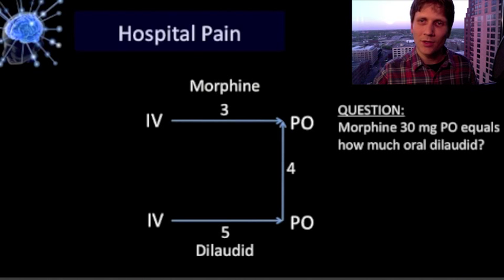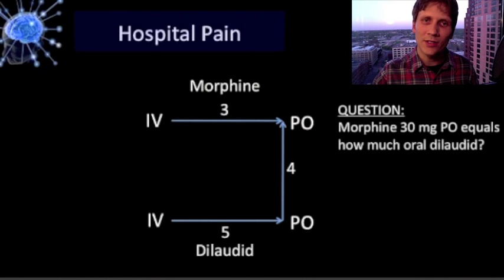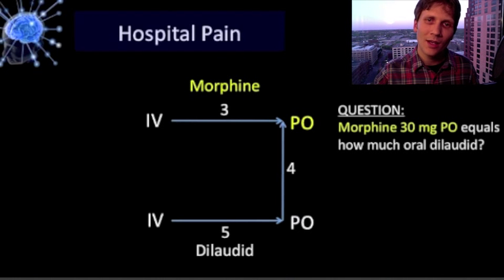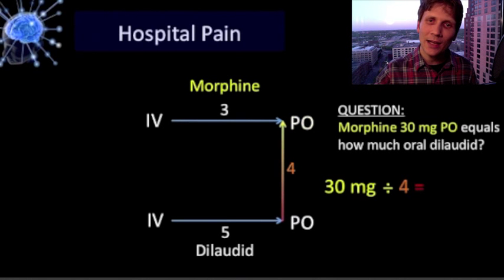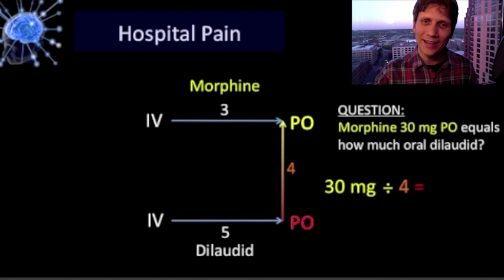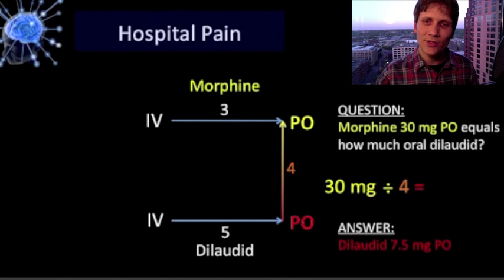Question two: morphine 30 milligrams PO equals how much oral dilaudid? Now we start on the right side since we're talking about orals, still on top because it's morphine. This time we divide because we're going against the arrow to get down to PO dilaudid. So 30 divided by 4 — our answer is 7.5 milligrams.